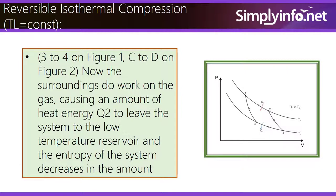Reversible Isothermal Compression: 3 to 4 on figure 1, C to D on figure 2. Now the surroundings do work on the gas, causing an amount of heat energy Q2 to leave the system to the low temperature reservoir and the entropy of the system decreases in the amount.